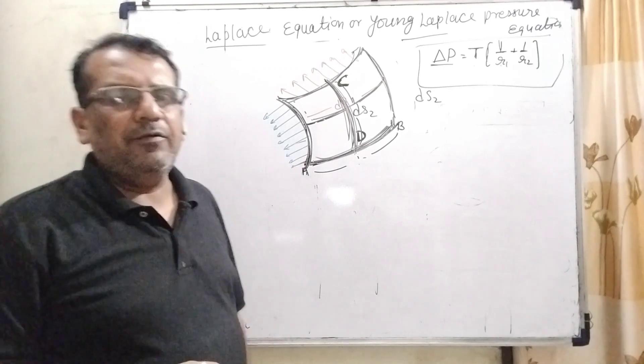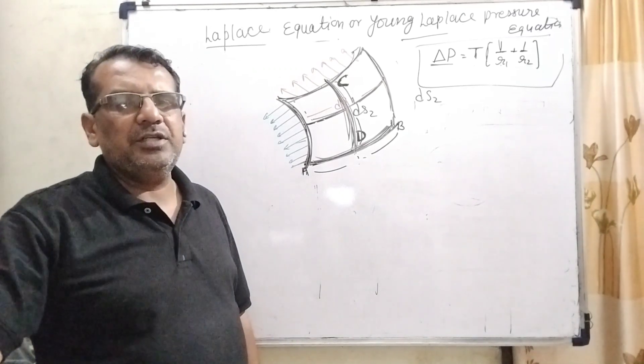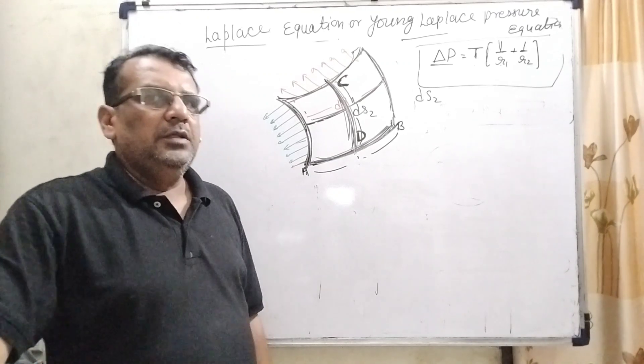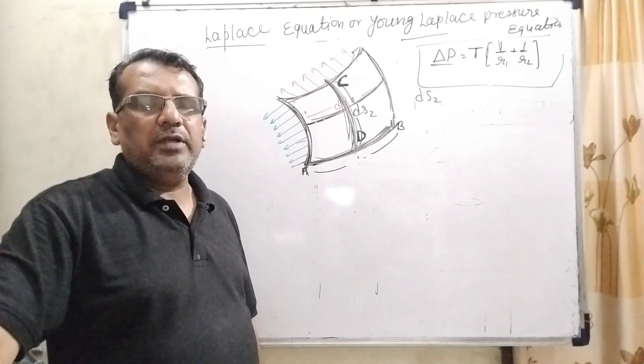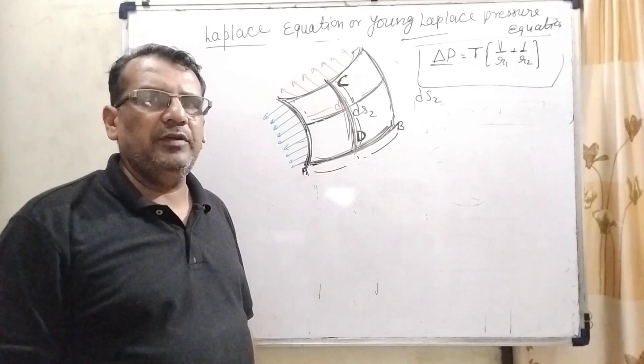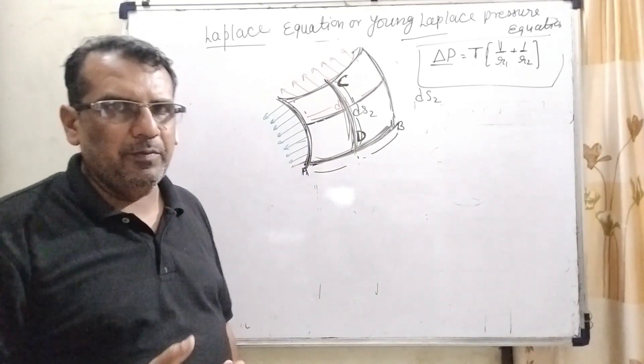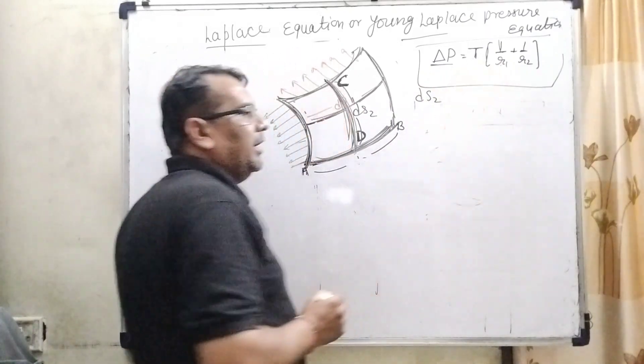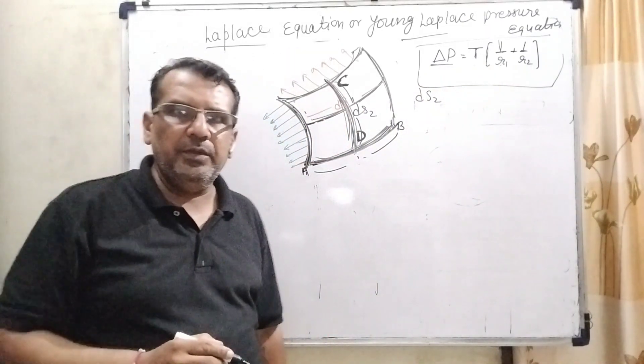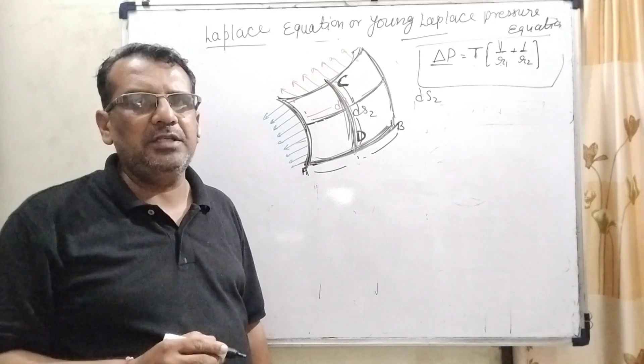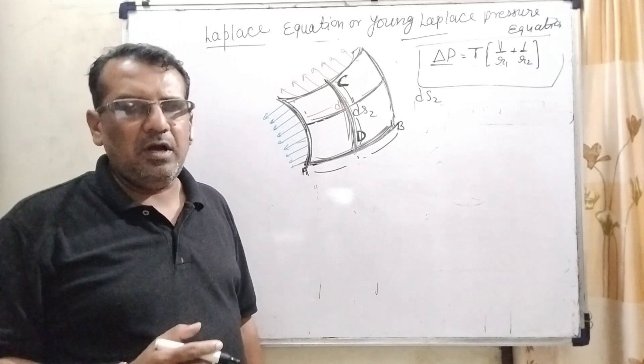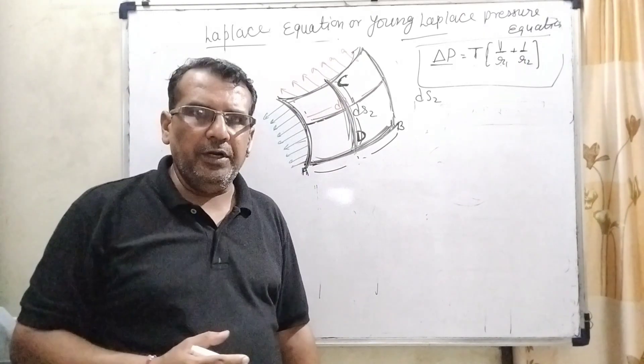Yes, today we have to derive the Laplace equation, or Young-Laplace pressure equation. This equation is very useful to find out excess pressure inside a curved liquid body. The equation is delta P equal to T into bracket 1 by R1 plus 1 by R2. Here, delta P is the excess pressure, T is surface tension, and R1 and R2 are the radii of curvatures of the given liquid body.